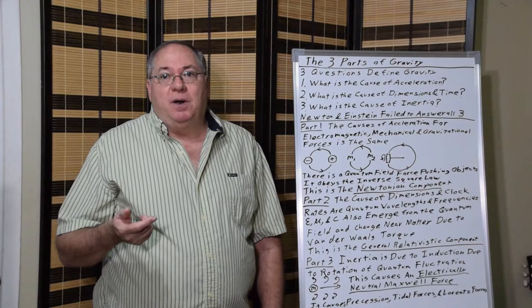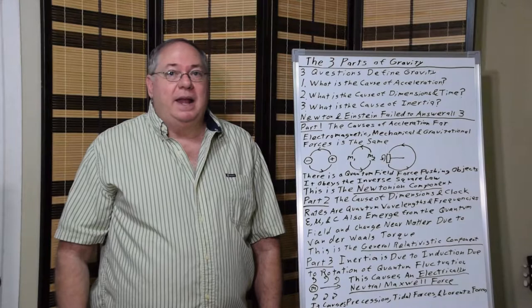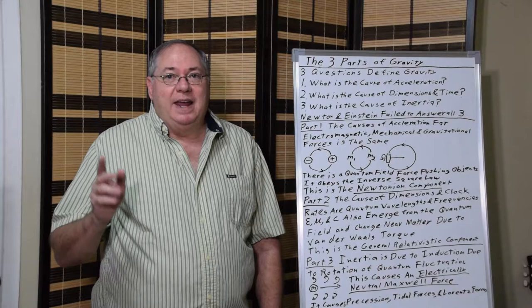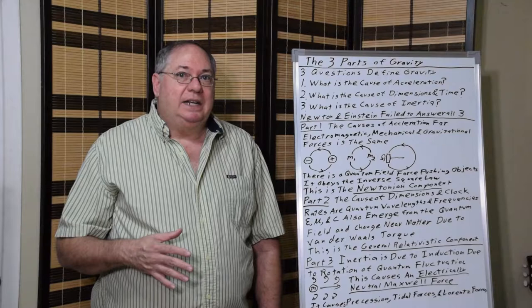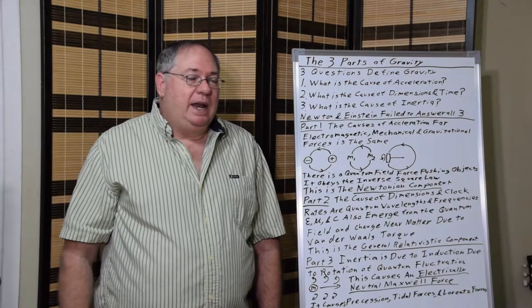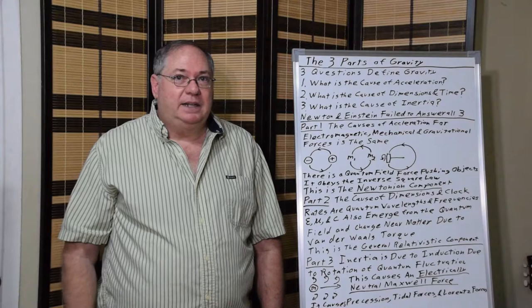We have to answer the question of where do the dimensions and time come from. The third part is: what's the cause of inertia? This is another one where Newton and Einstein both kicked the can down the road and didn't try to answer it. But by failing to answer it, they failed to understand that it's a much bigger issue.